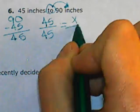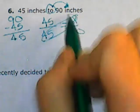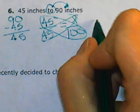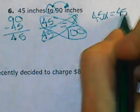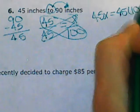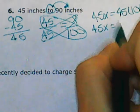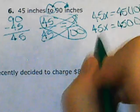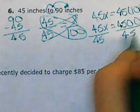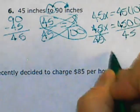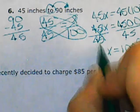Set it equal to x over 100. You cross-multiply, so you get 45 times x equals 45 times 100. That gives 45x equals 4500. Divide both sides by 45, and x equals 100%.